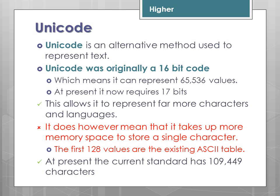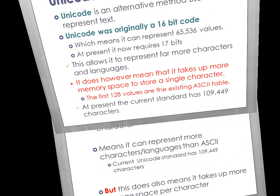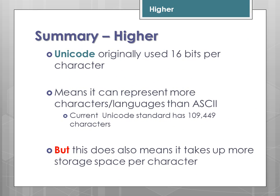The first 128 values of Unicode are actually the existing ASCII table. At present, the current standard has approximately 109,449 characters. To summarise: Unicode originally used 16 bits per character. It can represent far more characters and languages than ASCII, but the disadvantage is that it also takes up more storage space per character.